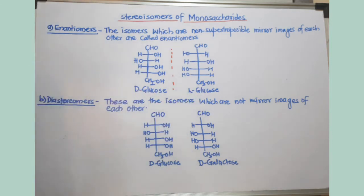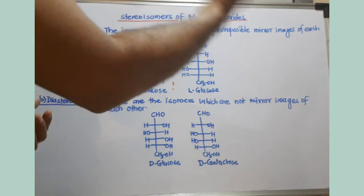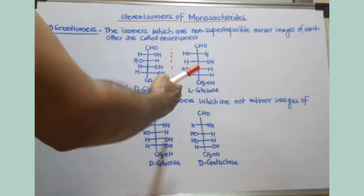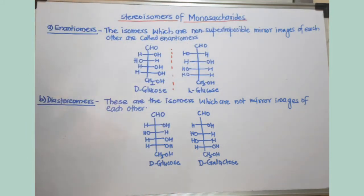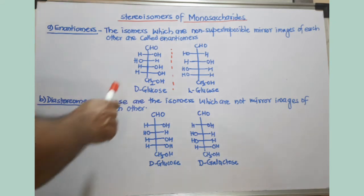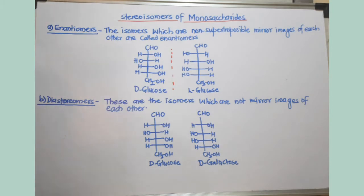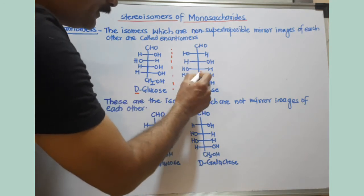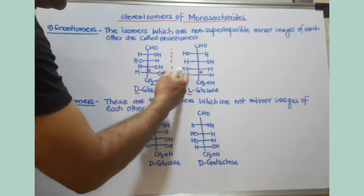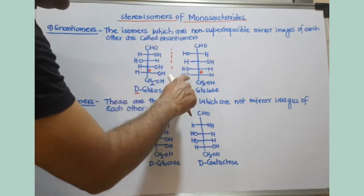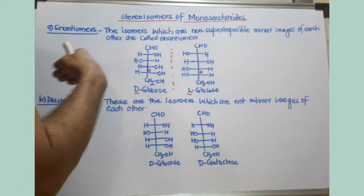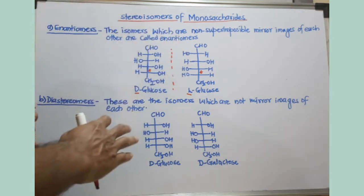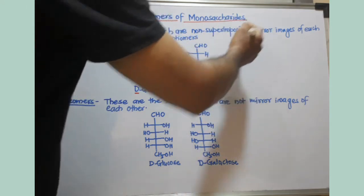So D-glucose and L-glucose are enantiomers. D-galactose and L-galactose are enantiomers. You draw the structure of a monosaccharide, consider a mirror, and draw its mirror image — that mirror image will be non-superimposable. There are four stereogenic centers. You change the letter D to L because the configuration at the last chiral carbon is different. The OH group is toward the left hand side, making it L. D and L monosaccharides are called enantiomers.